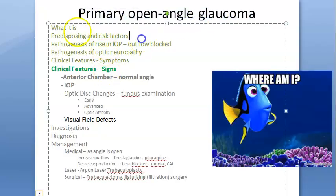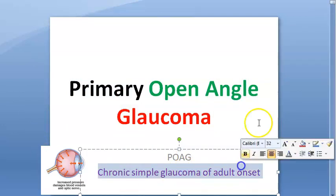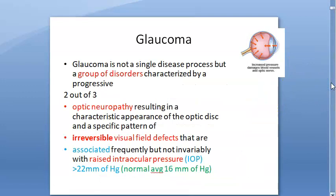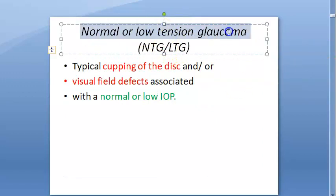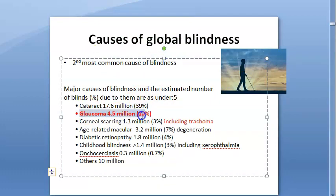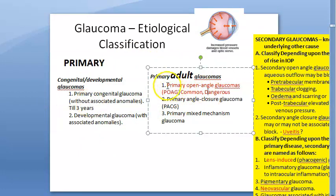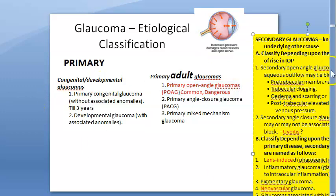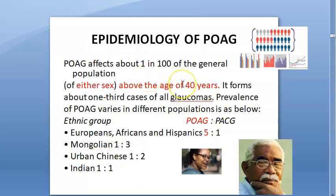Let us continue with primary open-angle glaucoma. Till now we have finished clinical features and signs. We now need to look at visual field effects. Let's start with a recap: primary open-angle glaucoma (POAG), also called chronic simple glaucoma of adult onset. We looked at the definition, rate of production of aqueous humor, how it is produced and drained. We looked at normal tension/low tension glaucoma, ocular hypertension, why glaucoma is a leading cause of blindness, and the classification. Currently we are in adult primary open-angle glaucoma. Epidemiology: mostly Europeans, Africans, Hispanics, people above age 40.